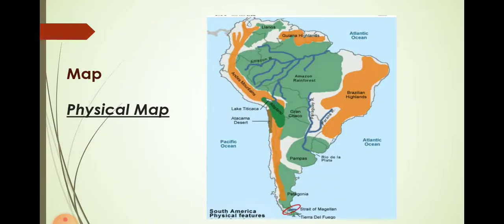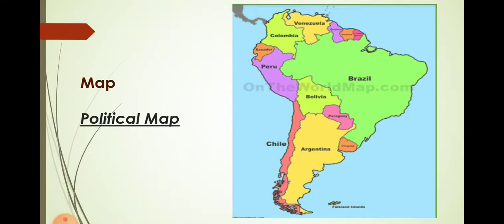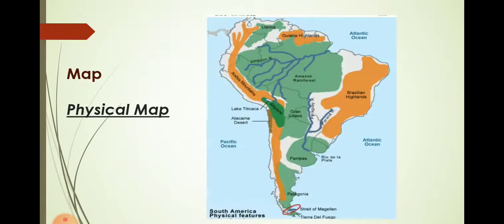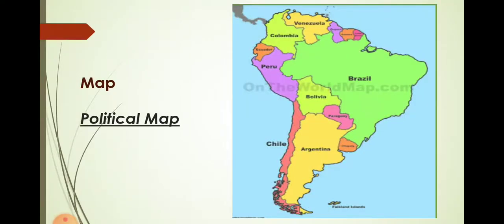Now you can see the physical map on screen. Places like Atacama, the Andes Mountains, the Atlantic Ocean, and the Pacific Ocean are marked. You also need to prepare a political map. You have to mark about 25 places in total: 15 places on the physical map and 10 places on the political map. The map study will be clearly explained in the next video, so please arrange two outline maps — one physical and one political map of South America.